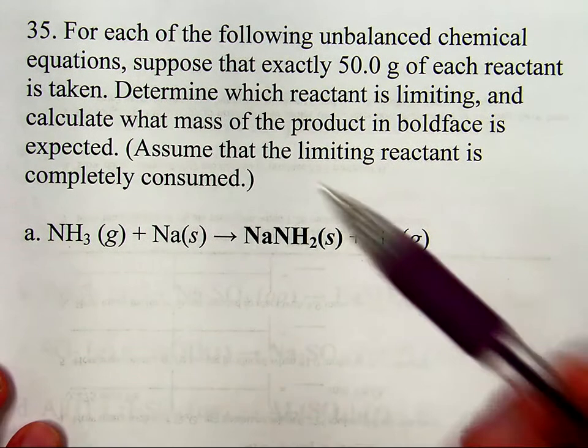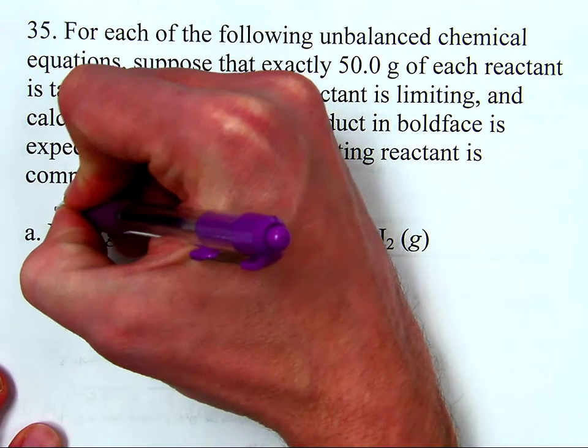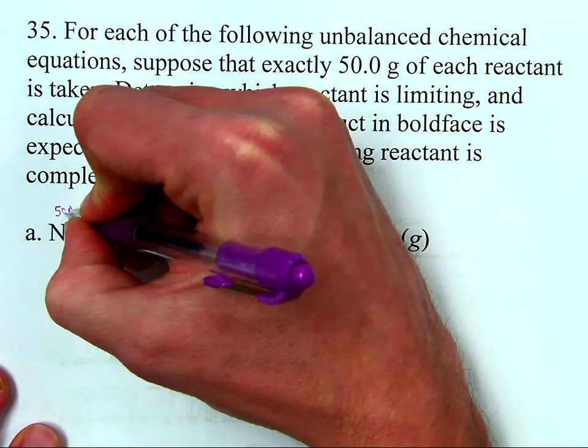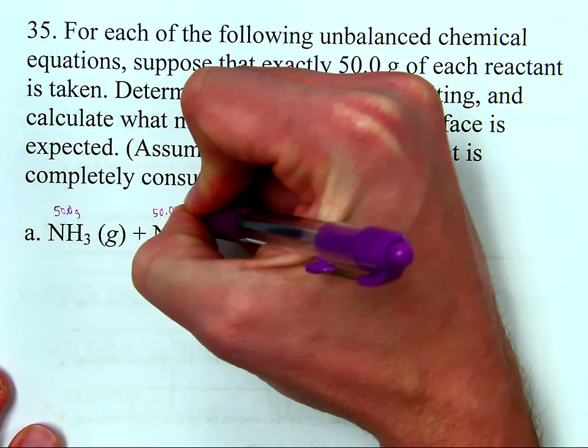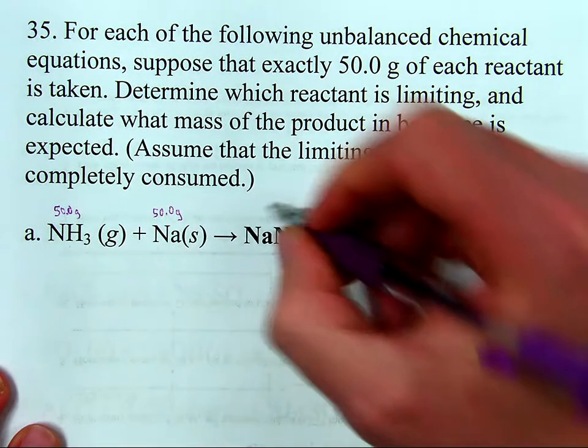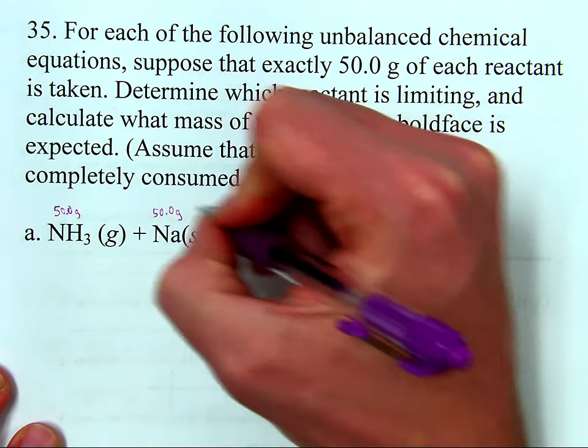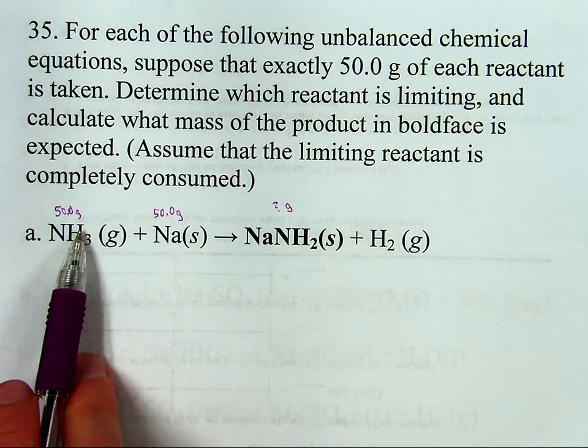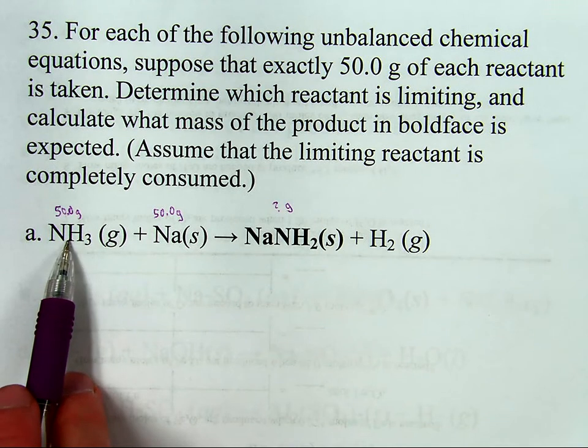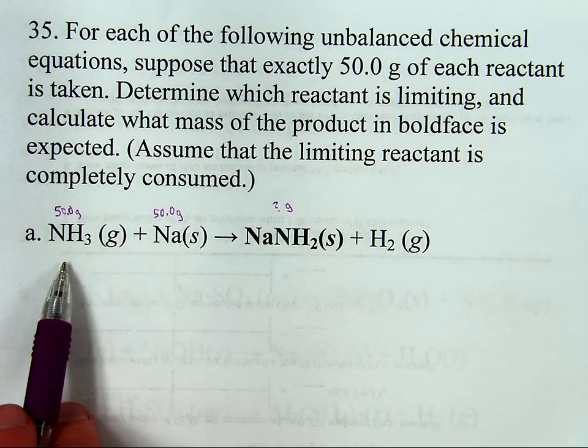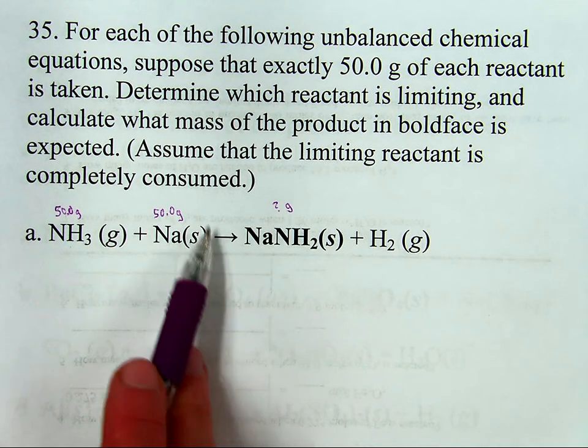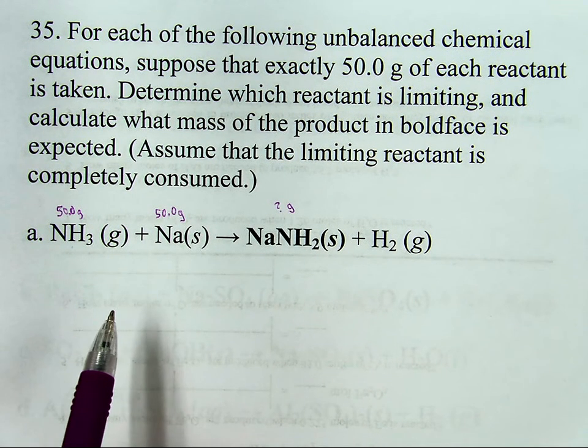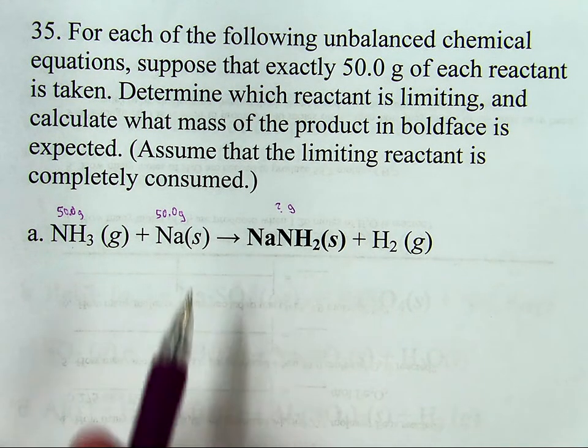All this question is saying is that if you have 50.0 grams of this reactant and 50.0 grams of this reactant, how many grams of this reactant are you going to get? Well, since there's nothing here to tell you whether this is limiting or this is limiting, you're going to do two calculations, one for this reactant and one for this one.